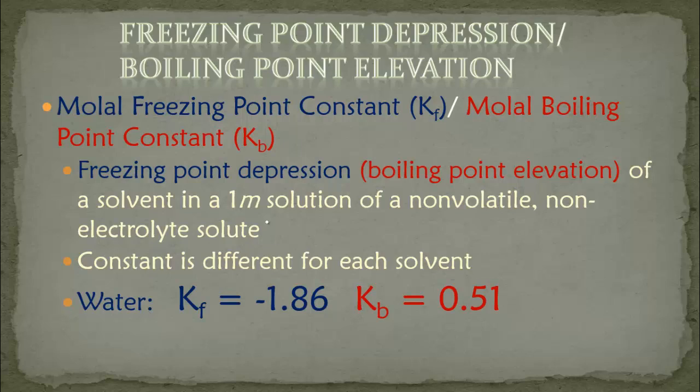To do so we have a small equation we are going to need to remember. In this equation we are going to have a constant called the molal freezing point constant, KF, where K is the symbol for the constant and F means freezing point. Or we're going to have the molal boiling point constant KB, where B stands for boiling. This is the freezing point depression or boiling point elevation of a solvent in a one molal solution of a non-volatile, non-electrolyte solution.